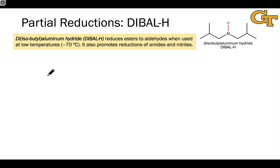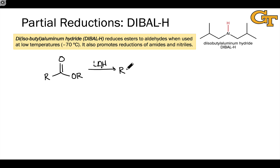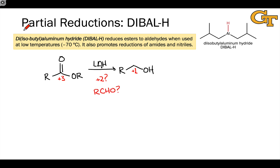A second problem with lithium aluminum hydride is that it absolutely tears through carboxylic acid derivatives. For example, if we start with an ester and treat with lithium aluminum hydride, there's no way to stop this reduction process at the aldehyde stage — no way to stop it at the hypothetical ether stage. It goes all the way to a primary alcohol. This corresponds to a change in oxidation state from plus three to plus one. But what if we wanted to stop at the plus two oxidation level? We can do that using a reagent effective at partial reduction — we're not going all the way down the oxidation ladder, just going down one step.